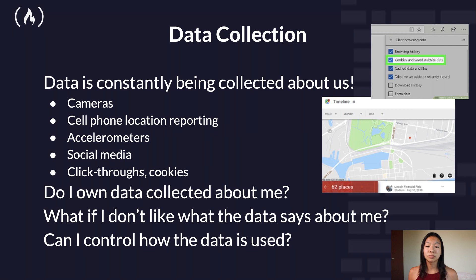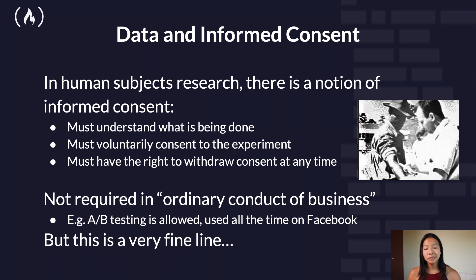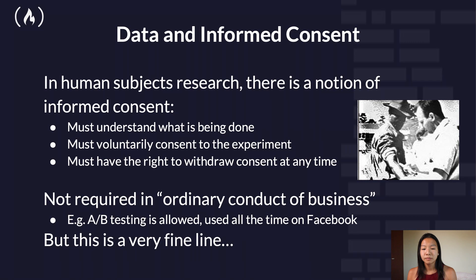For example, the EU's data protection law, GDPR, gives individuals a right to ask organizations to delete their personal data. In human subjects research, there's a notion of informed consent, which means that somebody must understand what is being done, voluntarily consent to the experiment, and have the right to withdraw consent at any time. But this isn't really required in the ordinary conduct of business, which might mean A/B testing on Facebook. This is a very fine line. So what are the implications for data and informed consent for organizations such as Facebook, Google, etc.? We'll look at some examples next, which serve as the basis for this direction.